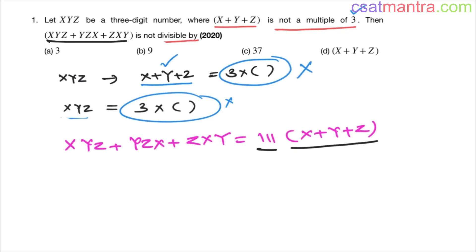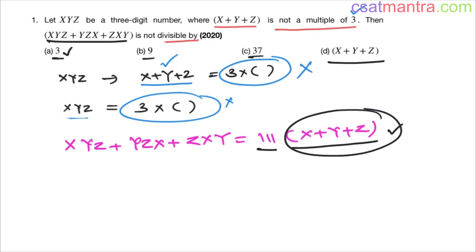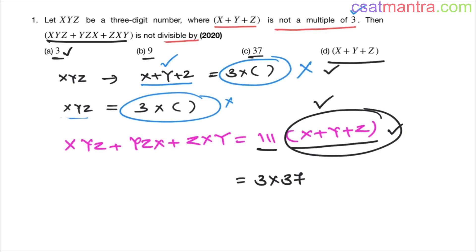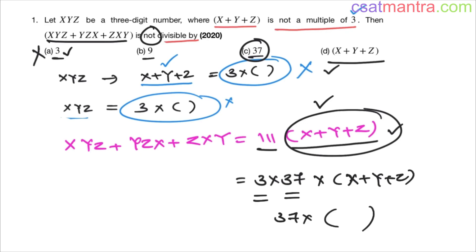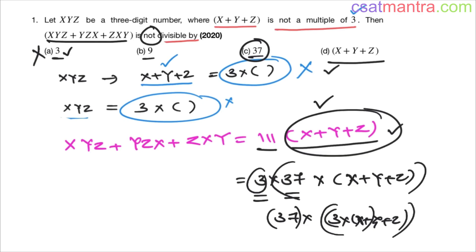Now let's check divisibility. Is this divisible by 3? We can write 111 as 3 × 37, so the sum equals 3 × 37 × (x + y + z), which is divisible by 3. So option A (divisible by 3) is not our answer — we want what it is NOT divisible by. It is also divisible by 37, so that is not our answer either.